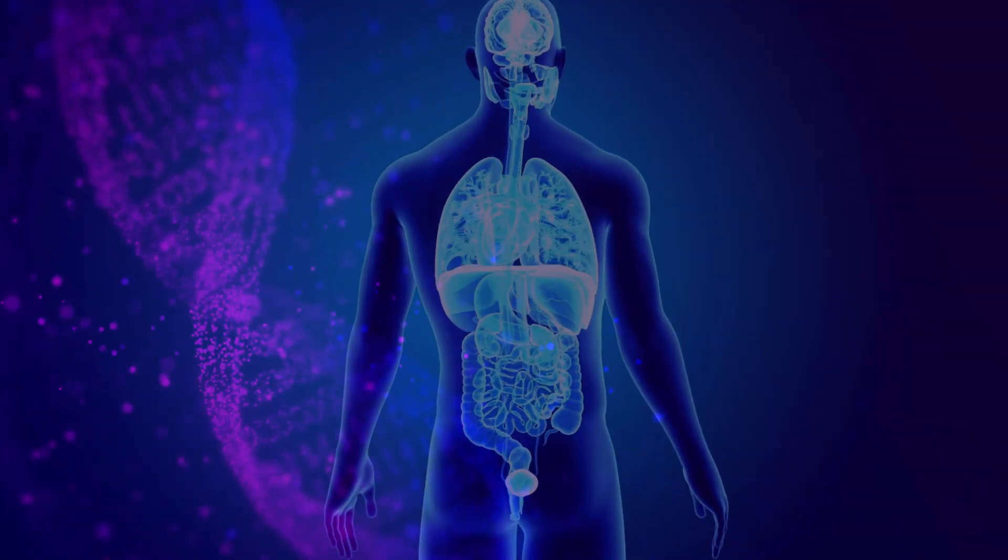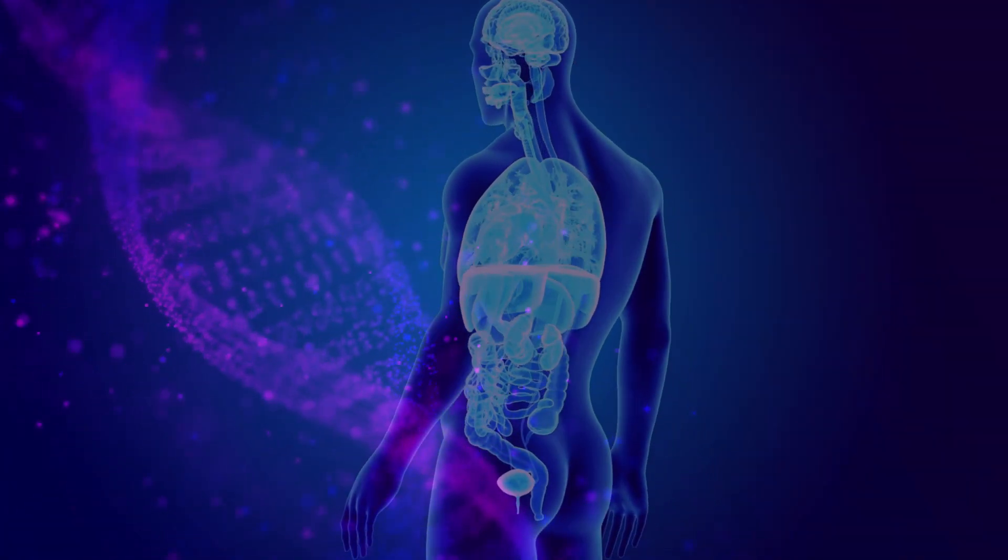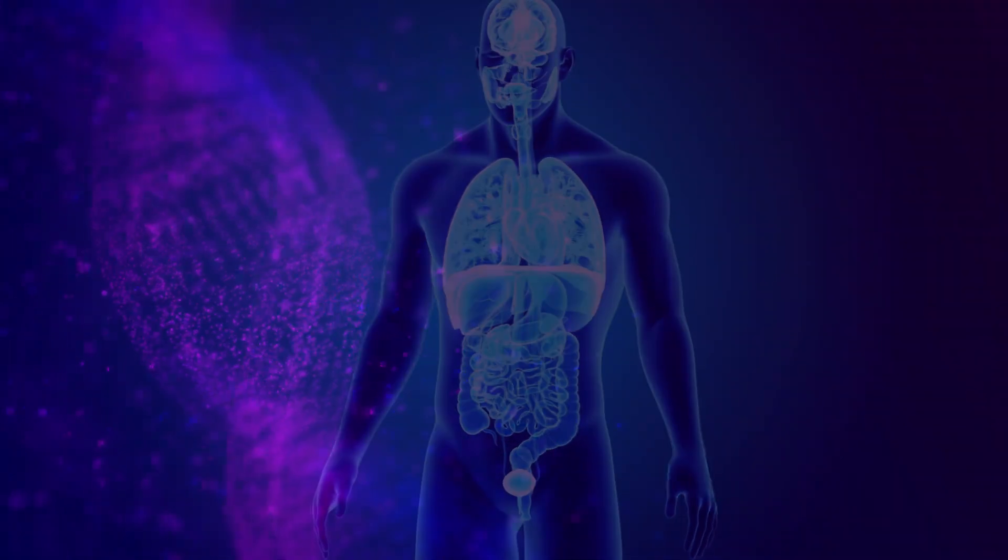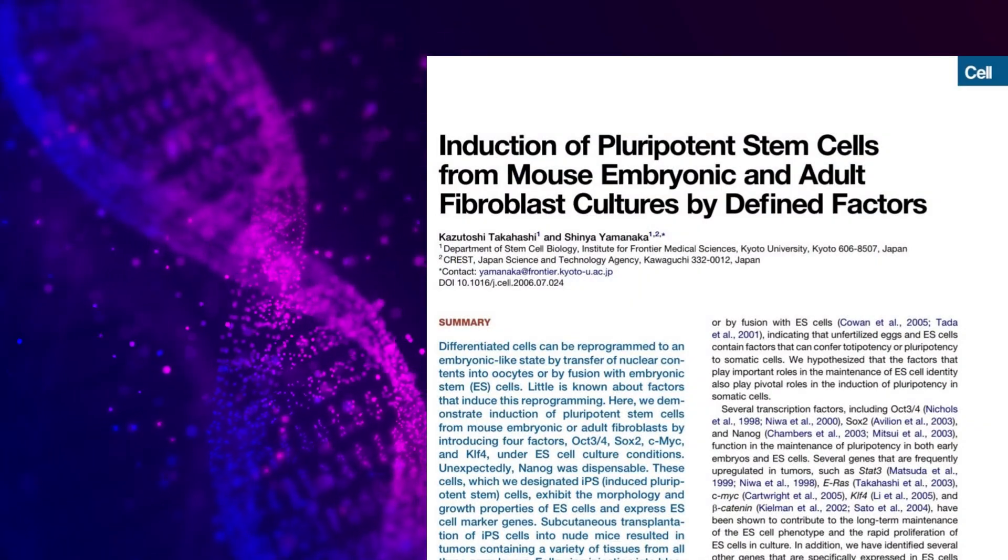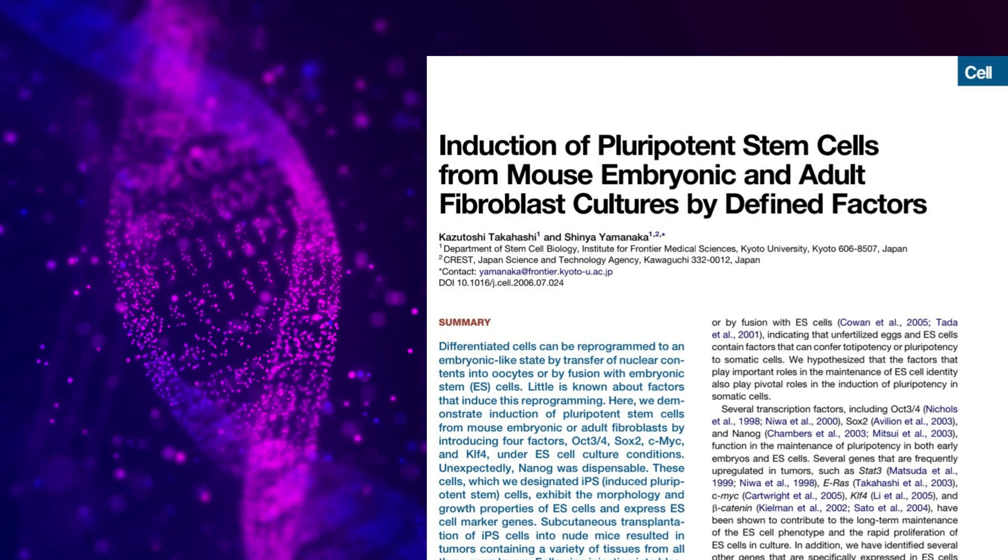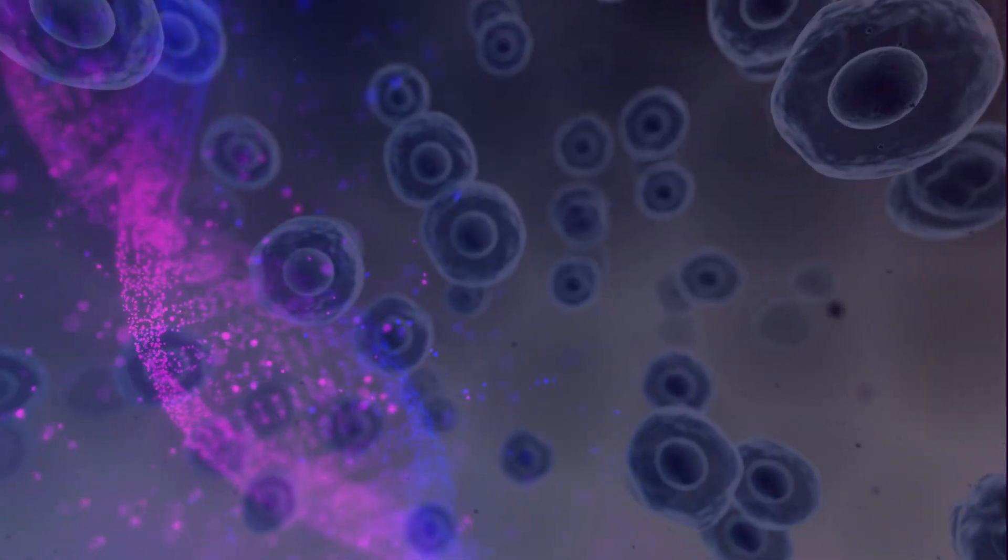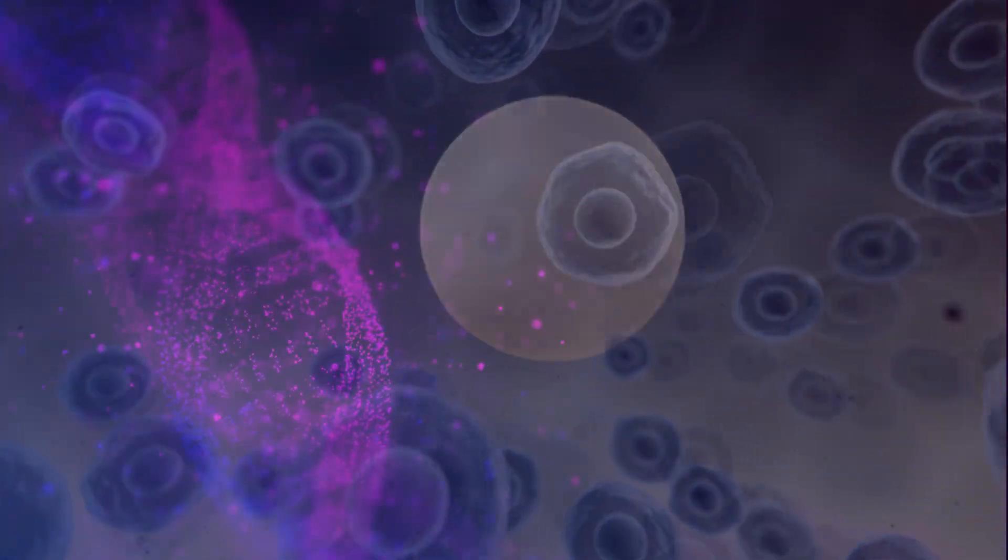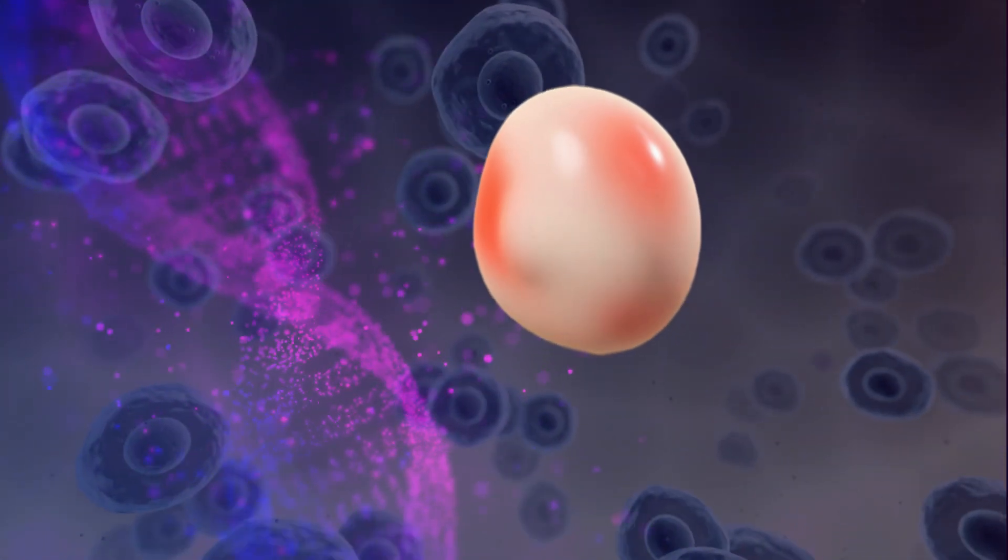Previously, several transcription factors and genes had been discovered that appeared to be involved somehow in the unique ability of stem cells to turn into multiple cell types. This study selected 24 such genes as candidate stem cell factors that they believed may be able to cause regular cells to become pluripotent. But how to test this?